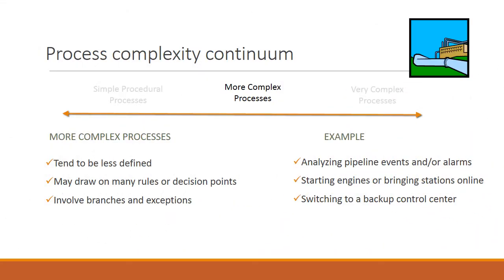Moving down the line, we have more complex processes. These tend to be less defined and may draw on many rules or decision points. They also involve branches and exceptions. Examples of these include analyzing pipeline events and alarms. The complexity of these processes comes in the decisions that may be needed — if pressures are too high and a vent is triggered, a section of pipe may need to be shut down for safety reasons.